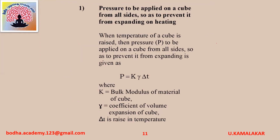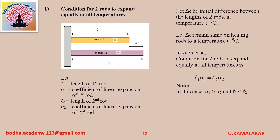Pressure to be applied on a cube from all sides so as to prevent it from expanding on heating: when temperature of the cube is raised, the pressure to be applied is P equals K into gamma into delta T, where K is bulk modulus of material of cube, gamma is coefficient of volume expansion of cube, and delta T is rise in temperature.